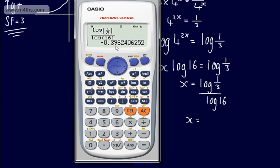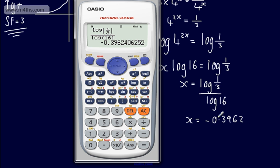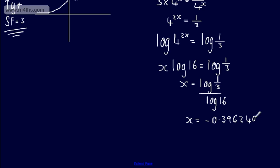So log of 1 third divided by log of 16. So we've got negative, so this is 3, 9, 6, 2. So 3, 9, 6, 2. Then we have after the 6, 2, 4, 0 and so on and so forth. We need to give our answer to 3 significant figures. So we'll have minus or negative 0.396, and that is given to 3 significant figures.